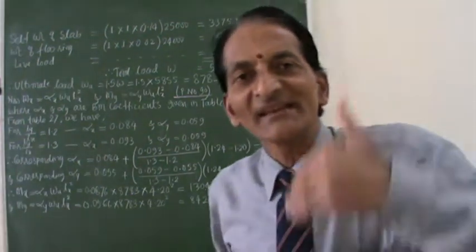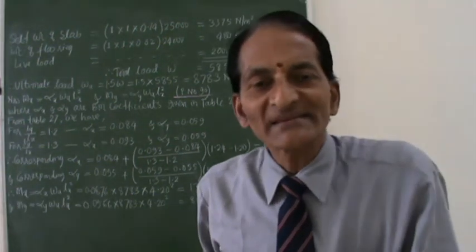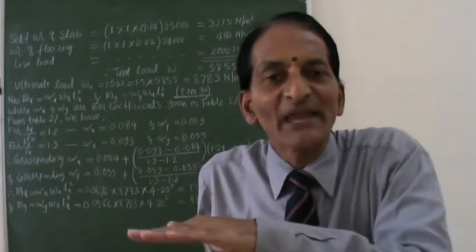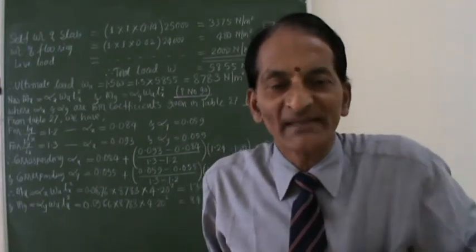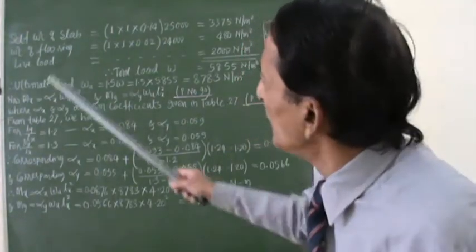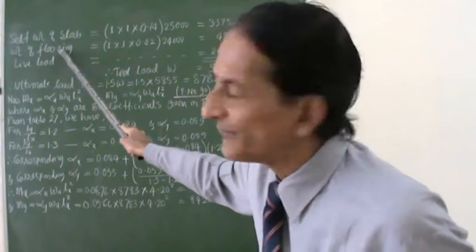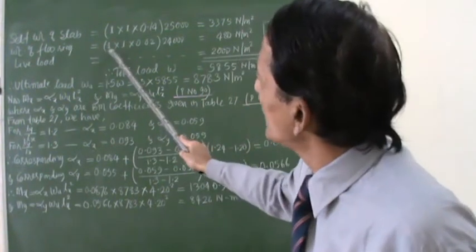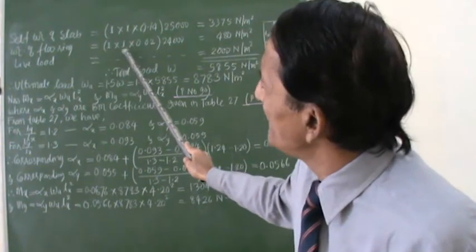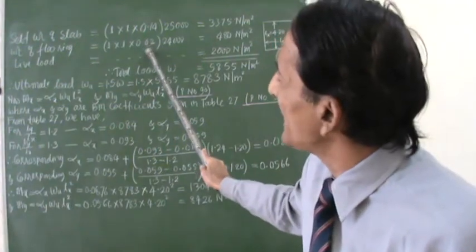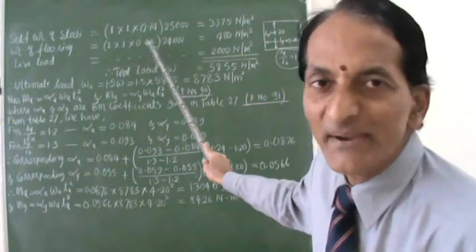Similarly, if you just recall the problem, he has stated that on the slab, he has put granolithic finishing. Granolithic finishing of 20 millimeter thickness. So that weight of flooring, I would like to consider it. It is also a dead load. So it is again 1 meter by 1 meter. And the thickness of that granolithic flooring is 20 millimeters. So it is 0.02 meter.